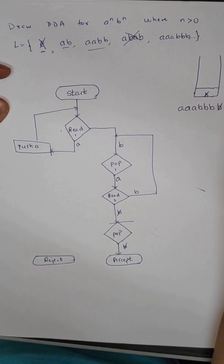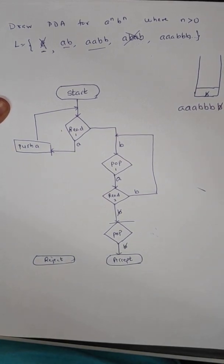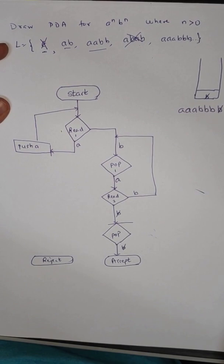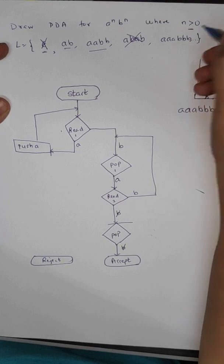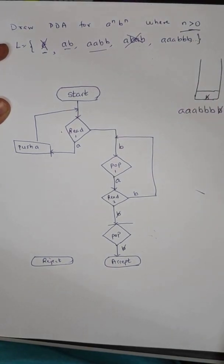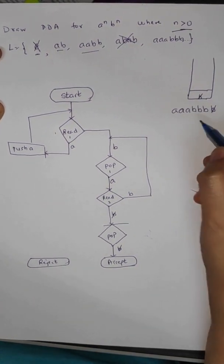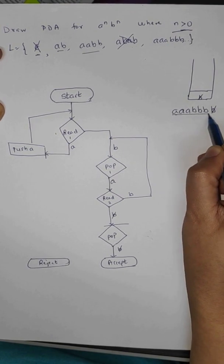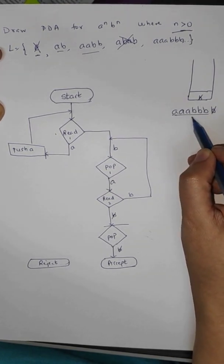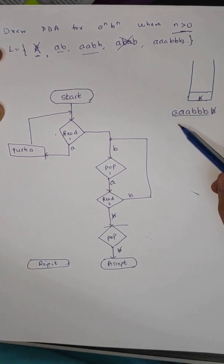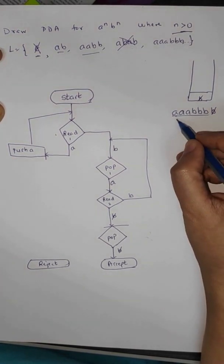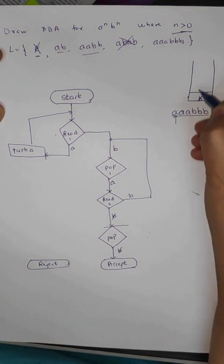Let us try to draw the PDA for this. Our algorithm is the same as that for a^n b^n where n was greater than or equal to zero, but the only difference is the condition that n is greater than zero — that means epsilon is not a valid string. Let us start with an example: a^3 b^3, so we have three a's and three b's.